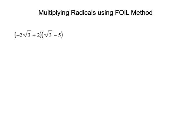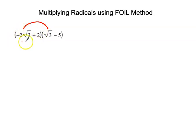In this video I'm going to show how to multiply radicals using the FOIL method. First, we're going to multiply the first terms: negative two square root of three times square root of three. I'm saying 'first' because negative two square root of three is the first term in this factor, and square root of three is the first term in the second factor.